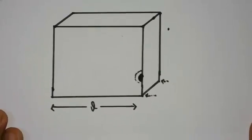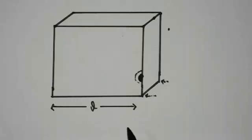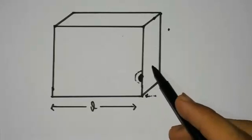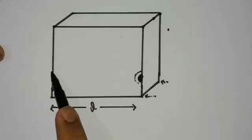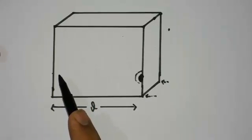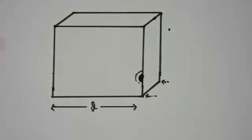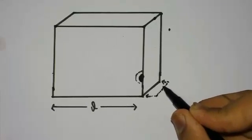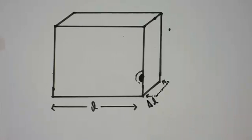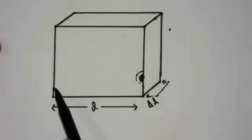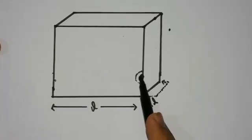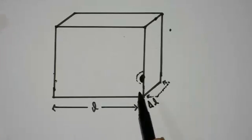In this second diagram, the photon has reached the other side of the box, having traveled the length L. According to Newton's third law, the box received an equal and opposite reaction, so the box recoiled backwards from its initial position by a distance delta L.